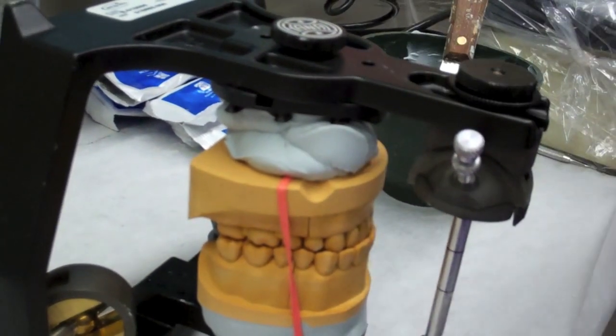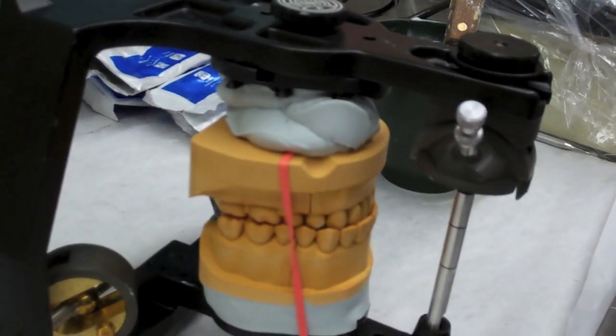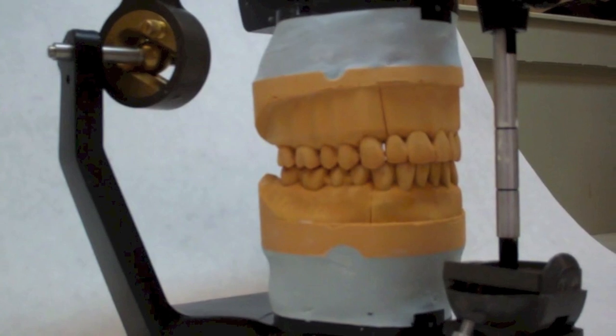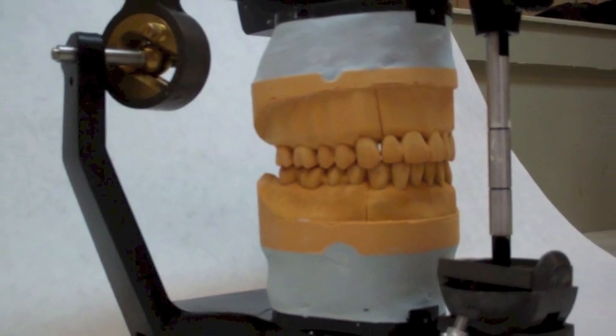Once the stone has set, you will repeat the steps you did with the maxillary, and then clean the articulation. When finished, your articulation should look similar to the one shown.